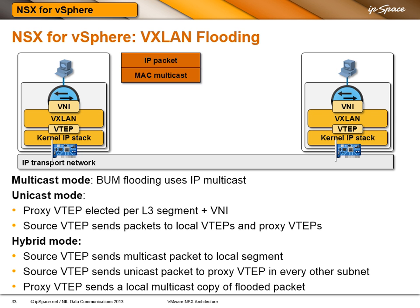NSX for vSphere uses only VXLAN encapsulation and you can select one of three flooding modes. You can use the traditional multicast mode where all the flooding is done through IP multicast, or you can use a new unicast mode which is even better than the unicast mode explained on the previous slide.